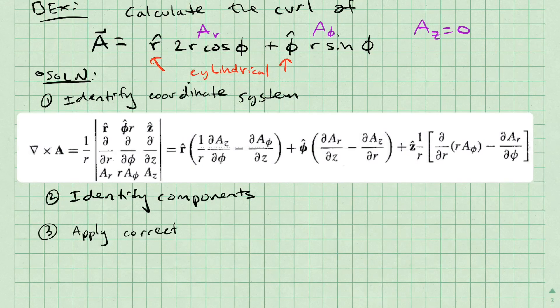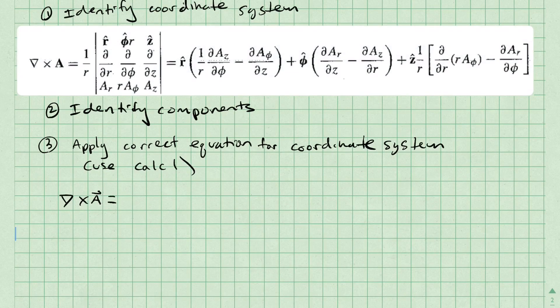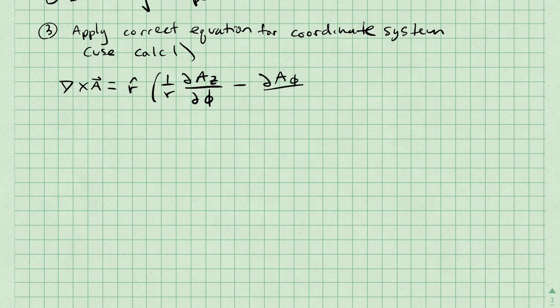The final step is to apply the correct equation for our coordinate system. We are just following the equation and using knowledge from Calculus 1 to compute partial derivatives. Let's rewrite these equations for cylindrical coordinates.